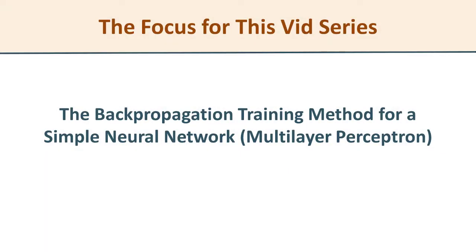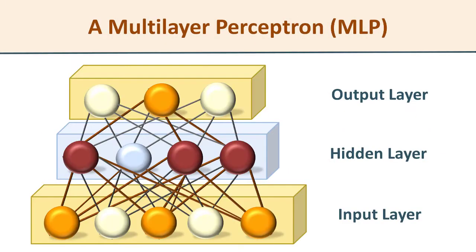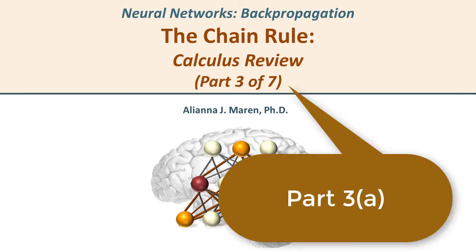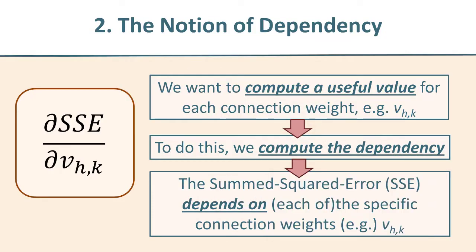The focus for this entire series is on the backpropagation training method. Throughout this we're going to work with just a very simple multi-layer perceptron consisting of an input layer, a middle or hidden, and an output layer. In this particular video, we're moving on to part three where we address the chain rule. In the previous video, we introduced the notion of dependency.